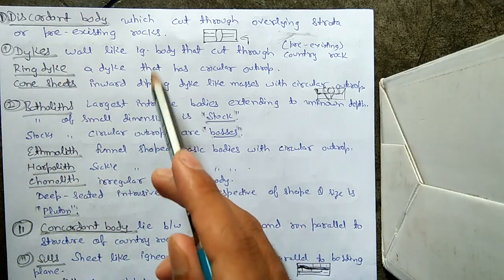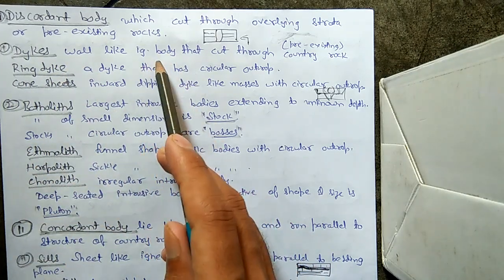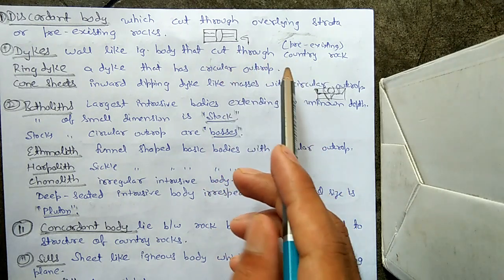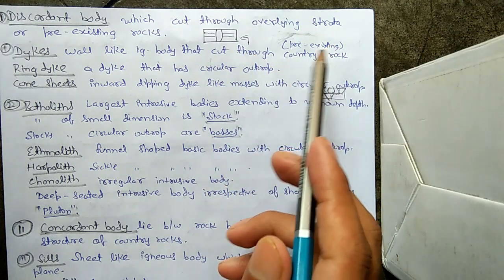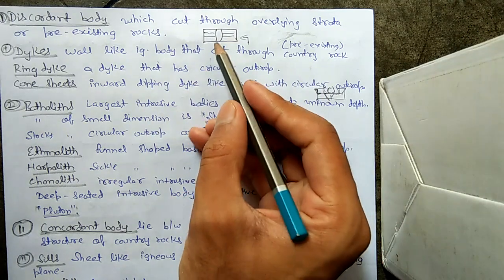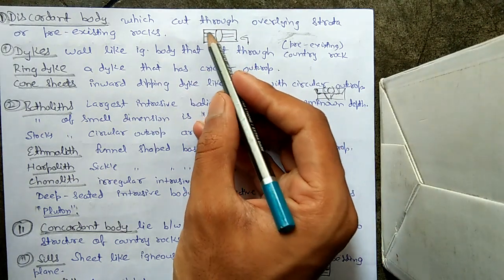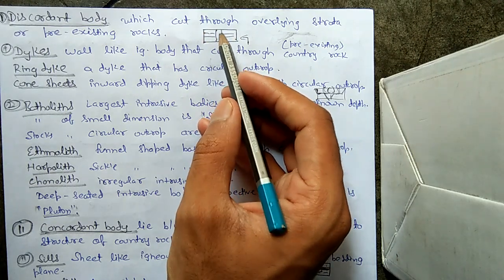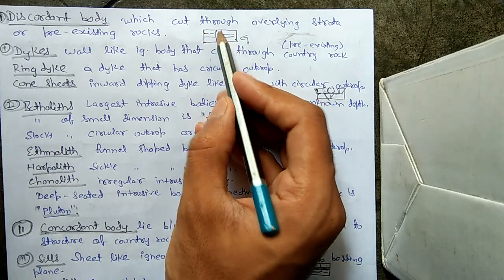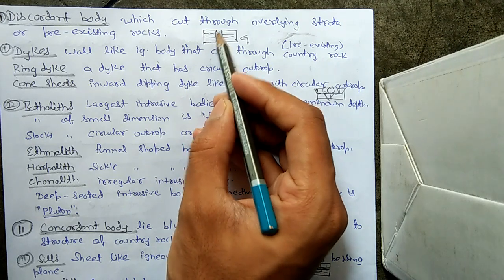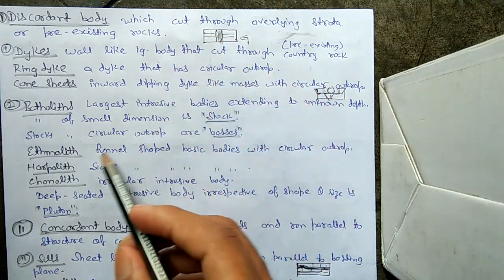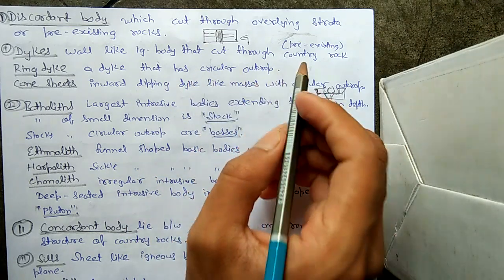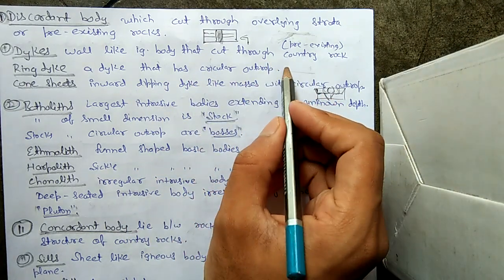What are dykes? Dykes are wall-like igneous bodies that cut through country rock. Country rock means pre-existing rocks. As you can see, this is a wall-like structure that is cutting through the country rock — this wall-like structure is called a dyke. The igneous mass in between is the dyke itself.